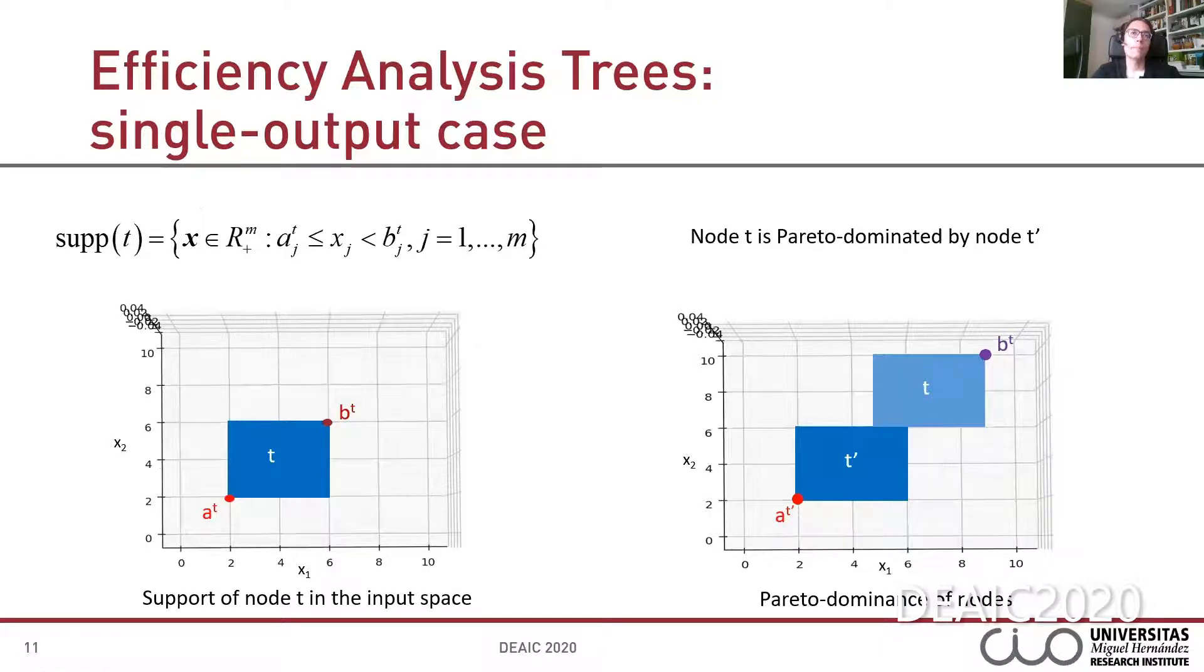More definitions. In the tree structure, node t is defined by the fulfillment of a series of conditions in the input space. We have here an input space with two inputs, x1 and x2. In this way, after executing a certain number of splits, there is a region in the input space with the shape of a segment if we consider only one input, a rectangle if we consider two inputs, etc. This region is the support of node t, which is characterized by two points, point at and point bt.